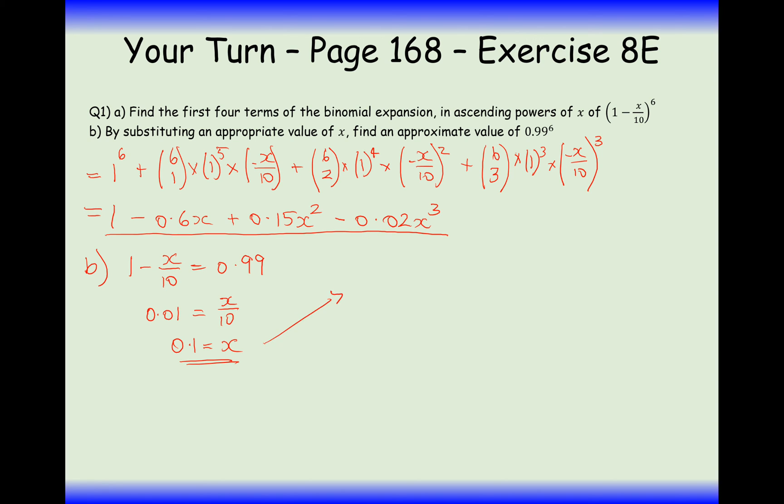Now what we've got just to do is to substitute 0.1 into this equation here, so it's going to be 1 minus 0.06, doing the multiplication there, and then it's going to be add 0.0015, and then it's going to be take away 0.02 times 0.1 times 0.1 times 0.1, and that gives us 0.000002.